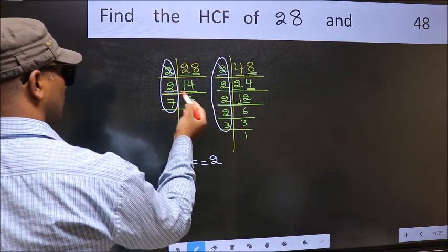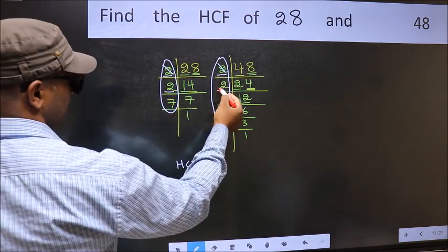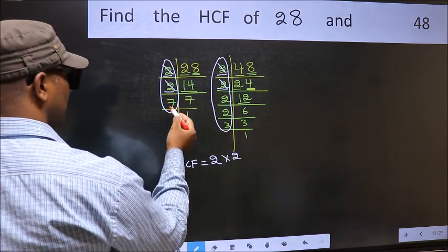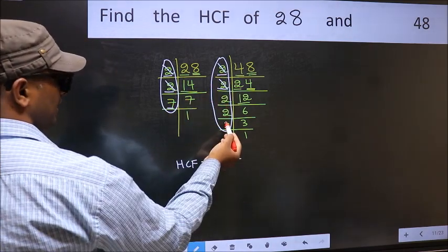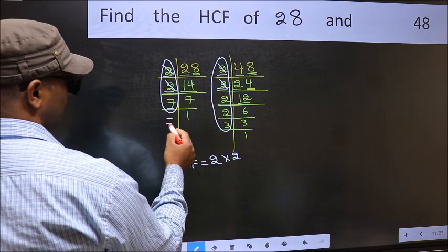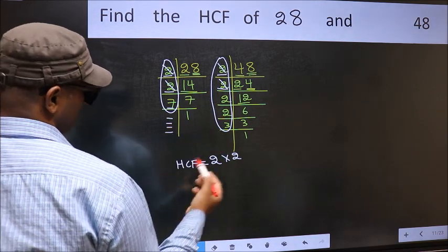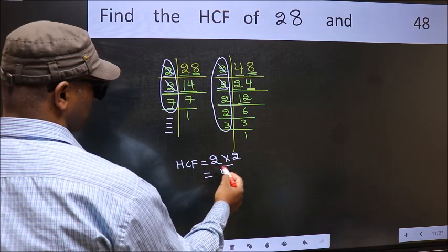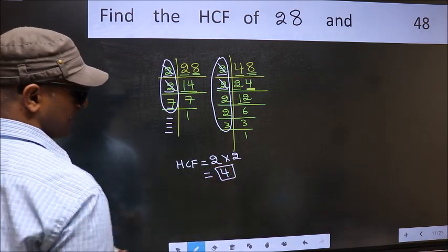Next number 7. Do we have 7 here? No. No more numbers have been left out. So our HCF is 2 times 2, 4 is our HCF.